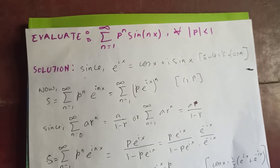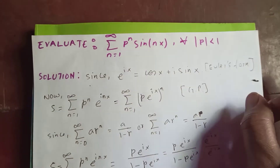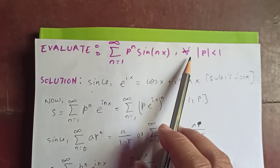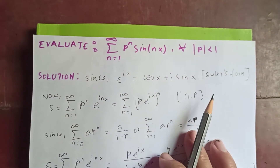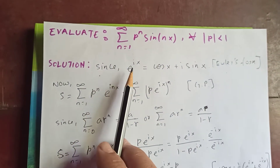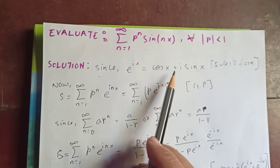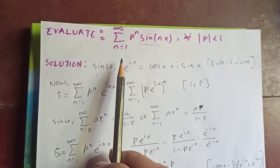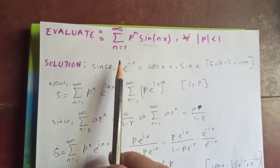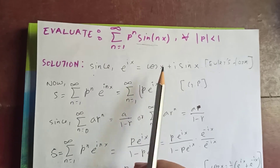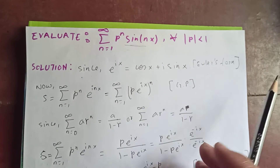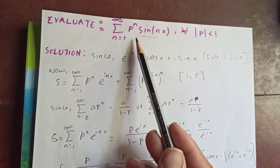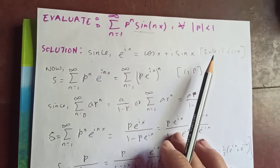Thanks for watching my video today. Let's evaluate this infinite sum: the sum from n equal to 1 to infinity of p^n · sin(nx), such that the modulus of p is less than 1. Since e^(ix) = cos(x) + i·sin(x), in order to get the sine term we are going to use this exponential, evaluate it, and then extract the imaginary part. This is Euler's formula, which I have already derived. Let's call this sum S.